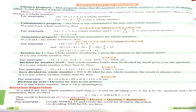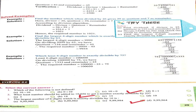See the example: divide 4500 by 55 and verify the result by the division algorithm. On dividing 4500 by 55, we find quotient = 81 and remainder = 45. For verification: dividend = divisor × quotient + remainder. So 55 × 81 + 45 = 4455 + 45 = 4500. This equals our dividend.